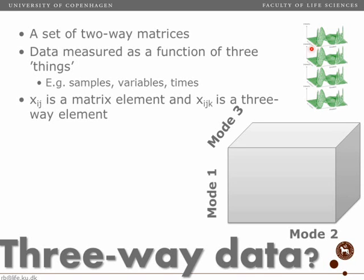Every element in a two-way matrix has two indices: the row number and the column number. For three-way data, we have the row number, the column number, and this is sometimes called the tube number.